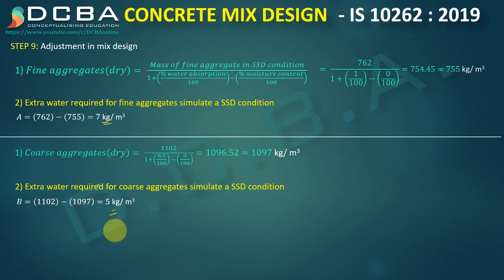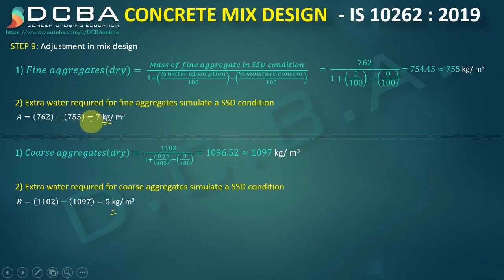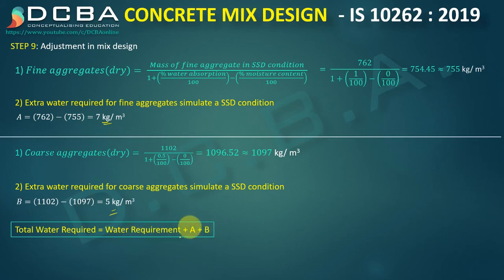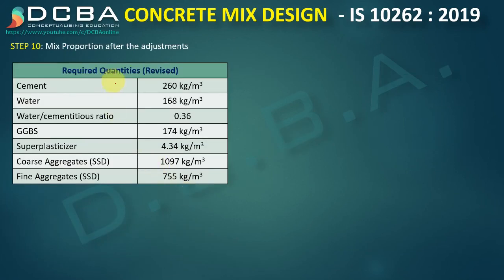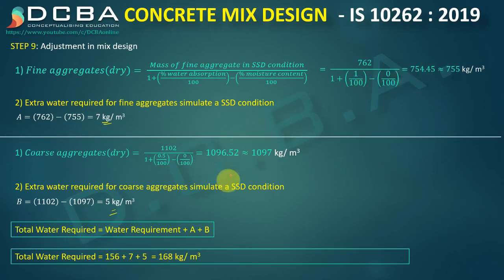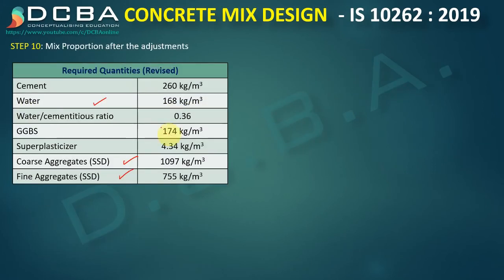Total water requirement = 156 + 7 + 5 = 168 kg/m³. Final revised quantities per m³: cement 260 kg, water 168 kg, water-cementitious ratio 0.36, GGBS 174 kg, superplasticizer 4.34 kg, coarse aggregate 1097 kg, fine aggregate 755 kg.